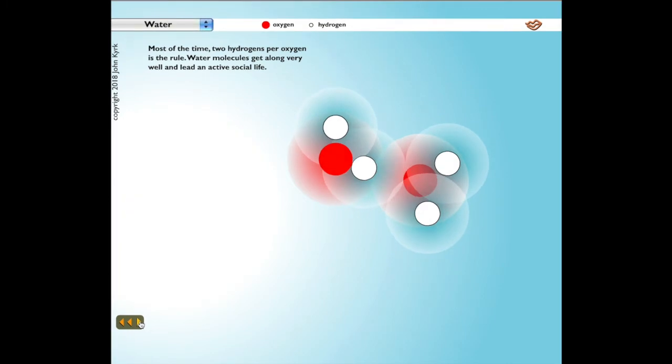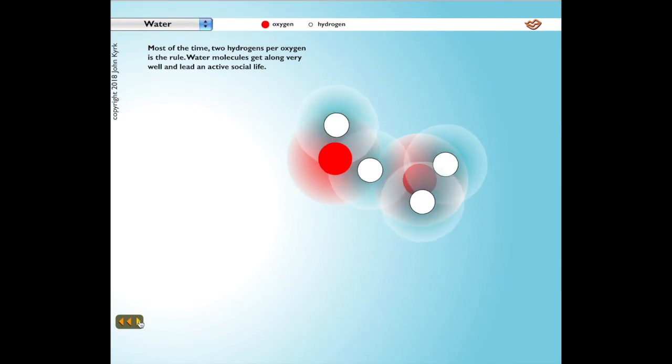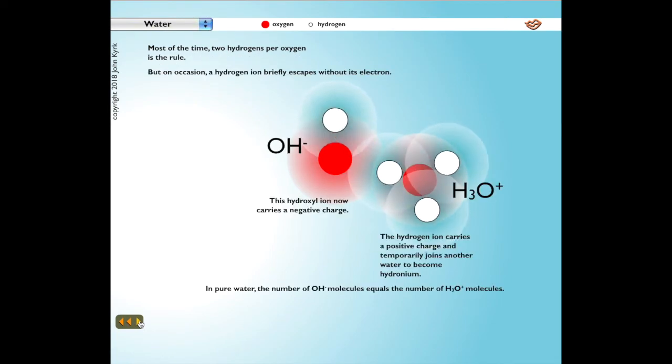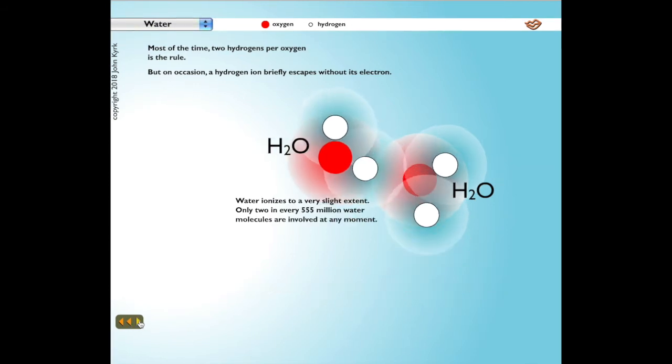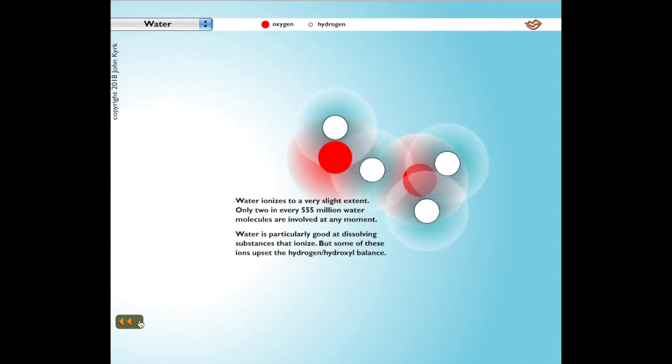Most of the time, two hydrogen atoms per oxygen is the rule. Water molecules get along very well and lead an active social life. But on occasion, a hydrogen ion briefly escapes without its electron. This hydroxyl ion now carries a negative charge. The hydrogen ion carries a positive charge and temporarily joins another water to become hydronium. In pure water, the number of hydroxyl molecules equals the number of hydronium molecules. Water ionizes to a very slight extent. Only two in every 555 million water molecules are involved at any moment.